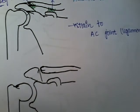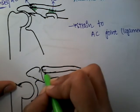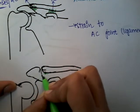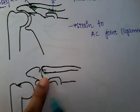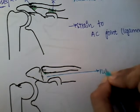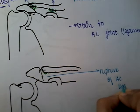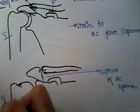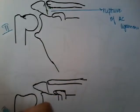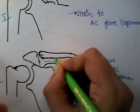In grade 2, there is rupture of the acromioclavicular ligament. This is the acromion process and this is the clavicle — you can see the rupture here. The acromioclavicular ligament has been ruptured. However, in grade 2, the coracoclavicular ligament remains normal.